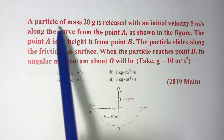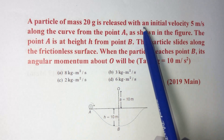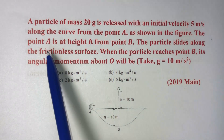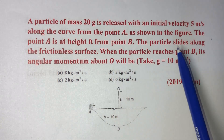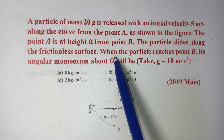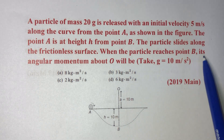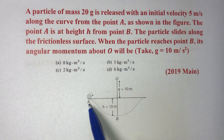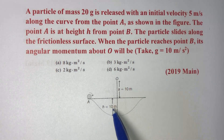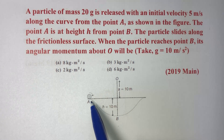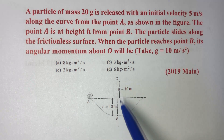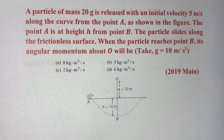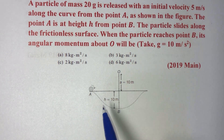Today's question: a particle of 20 grams is released with an initial velocity of 5 meters per second along the curve from point A as shown in the figure. Point A is at a height h from point B. The particle slides along a frictionless surface. When the particle reaches point B, its angular momentum about O will be — taking g as 10. Point O is at a distance of 20 meters from B.